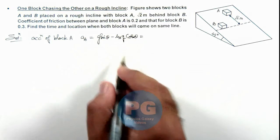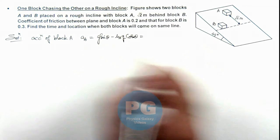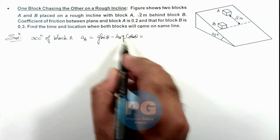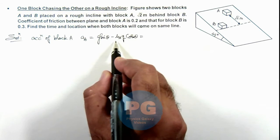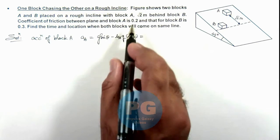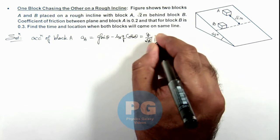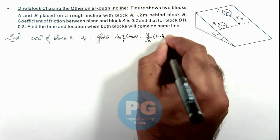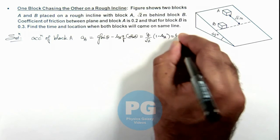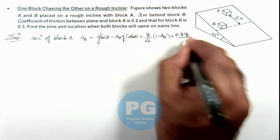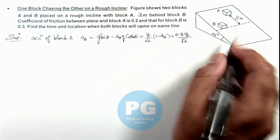Here the value of θ is 45° so sin θ cos θ will be 1/√2. And the value of μₐ we are given as 0.2 so here we can write it g/√2 multiplied by 1 minus μₐ. So this will be 0.8 g/√2, that is the sliding acceleration of block A.